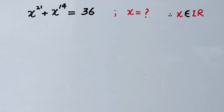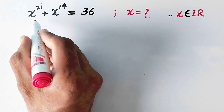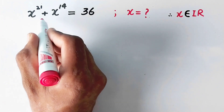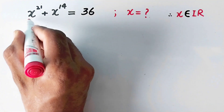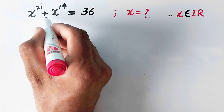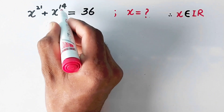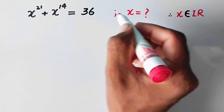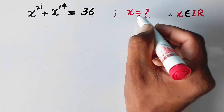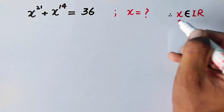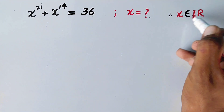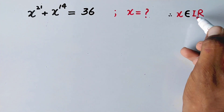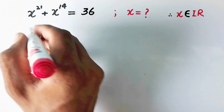Hello everyone, welcome to Explore Maths. Today we are going to solve a nice olympiad math question: x raised to power 27 plus x raised to power 14 is equal to 36, and we have to find the value of x, where x is an element of real numbers. So let us see the solution.